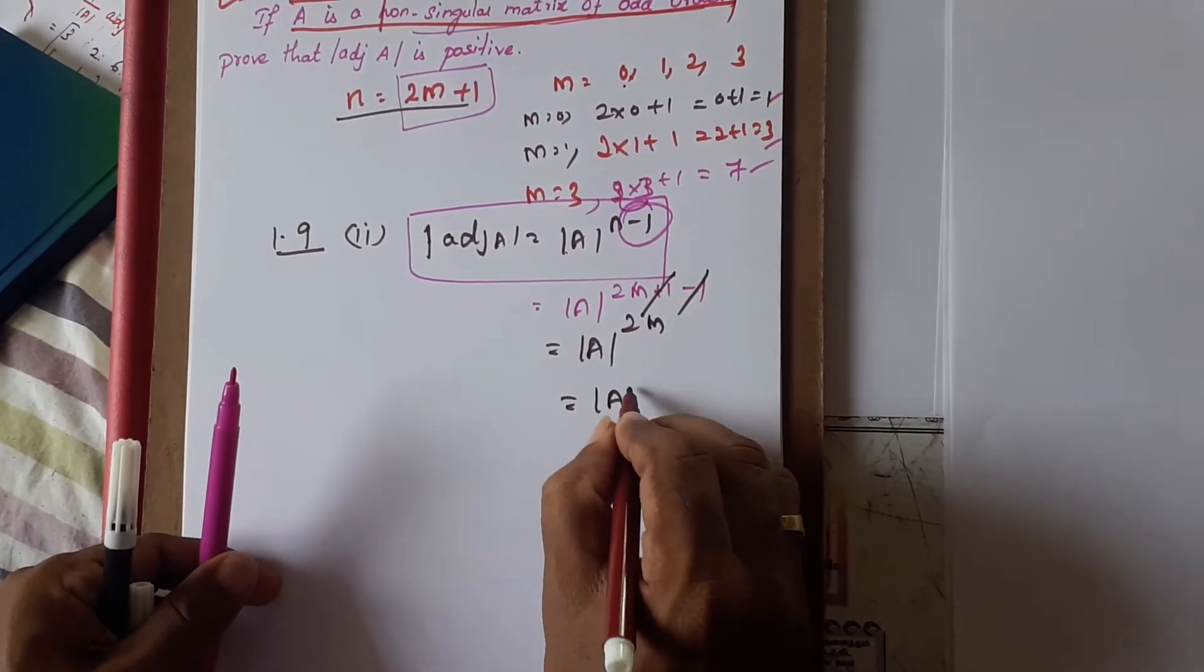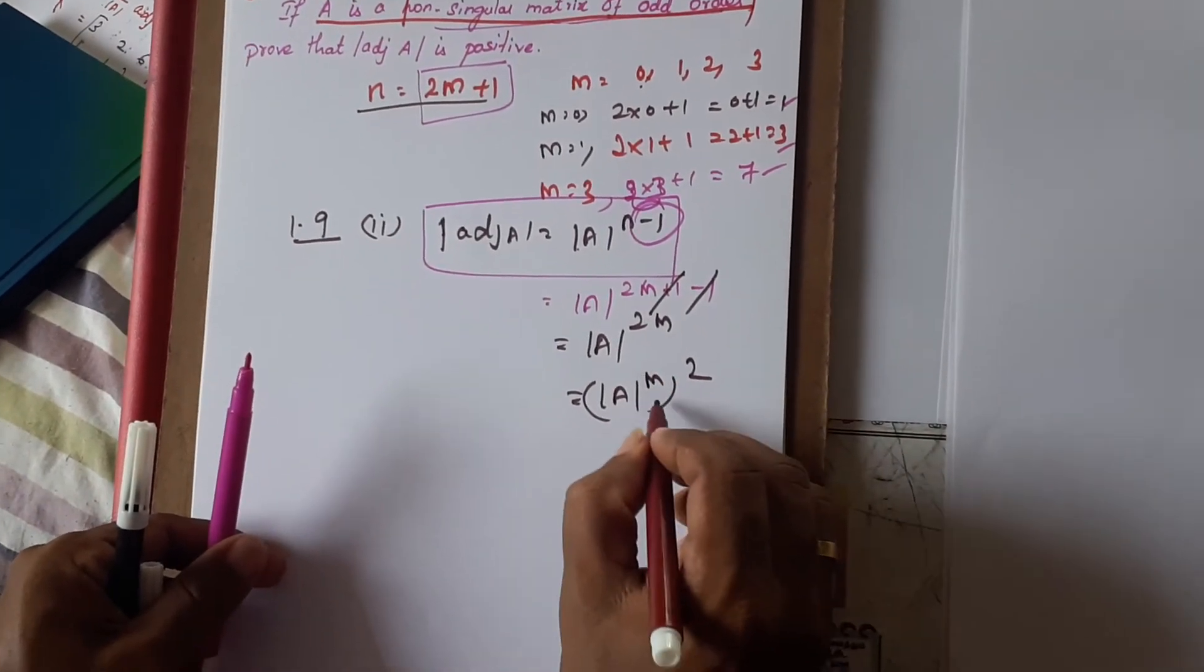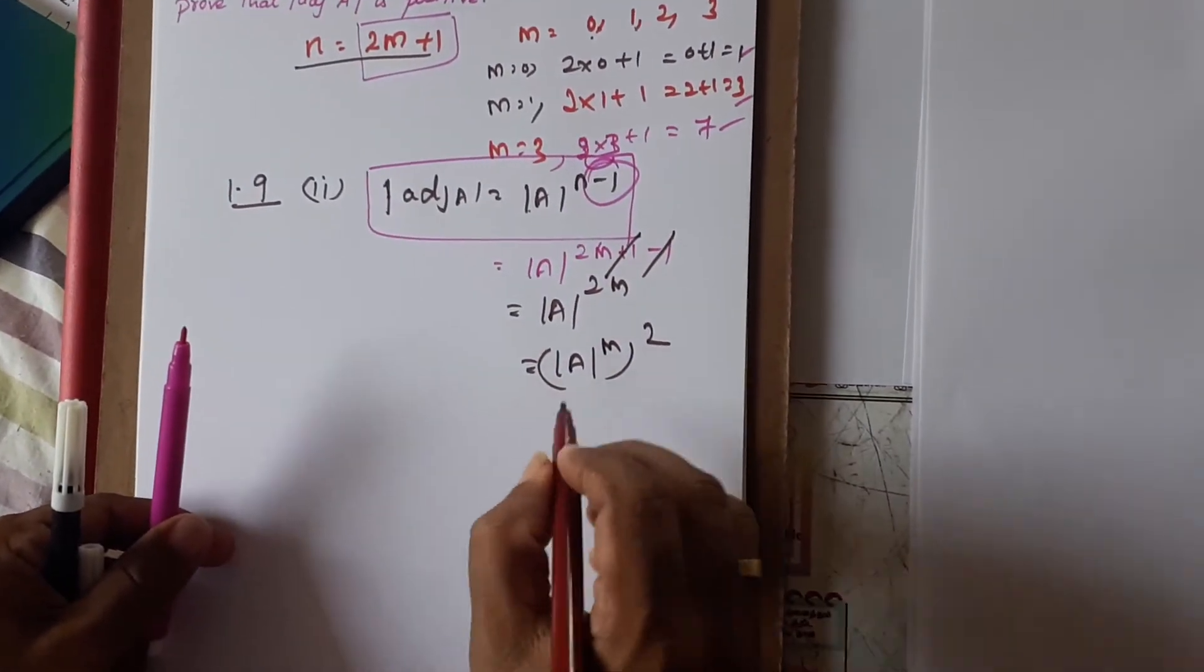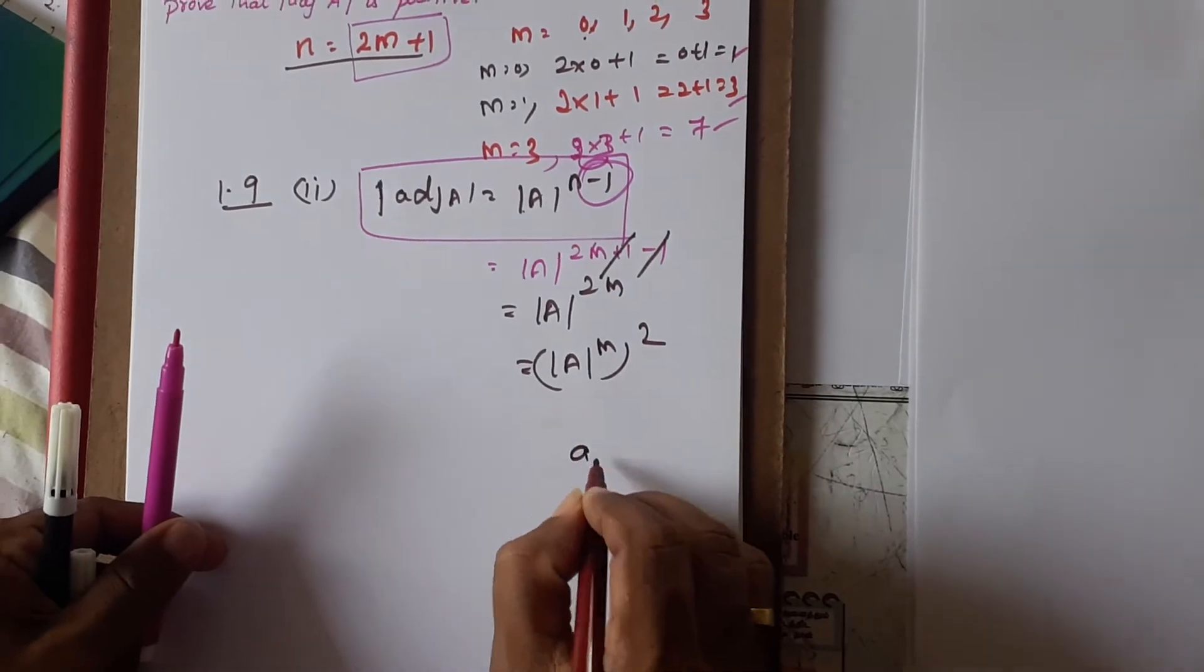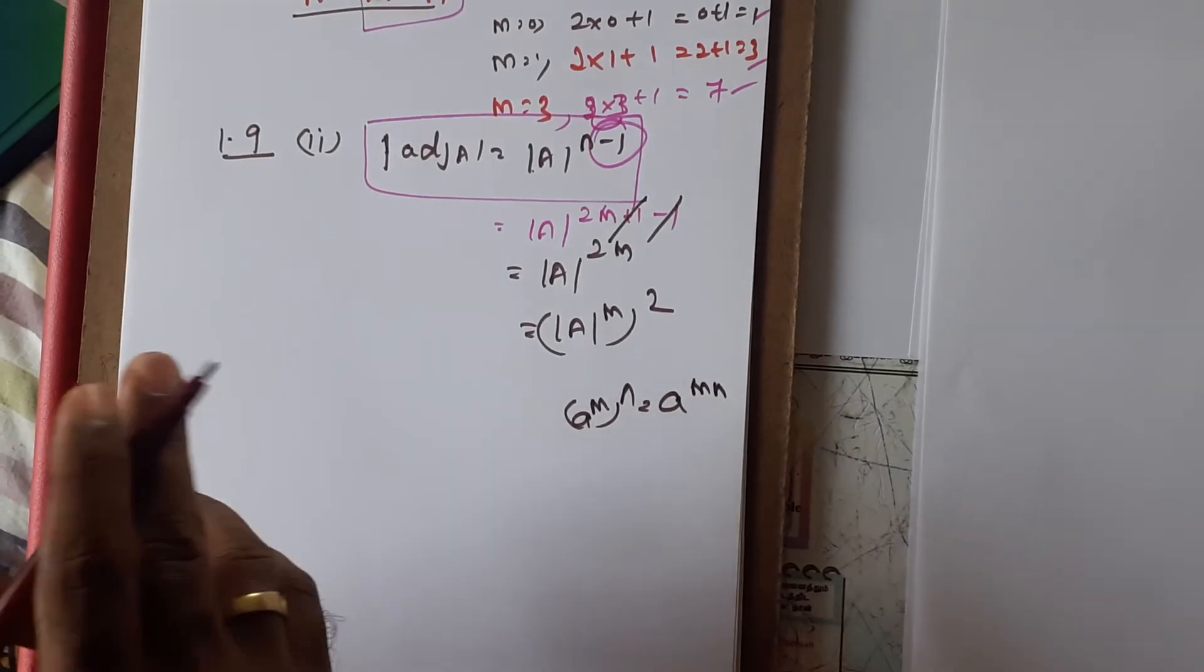This equals determinant of A to the power M, the whole square. According to indices form, A to the power M the whole power 2 means A to the power 2M.